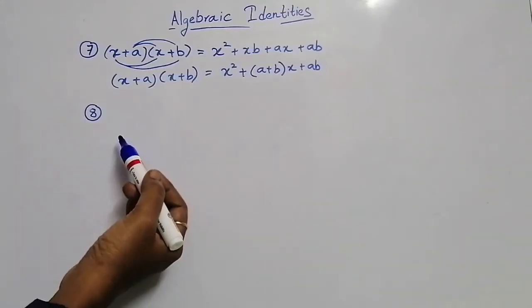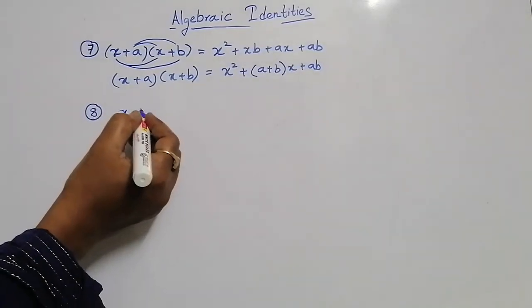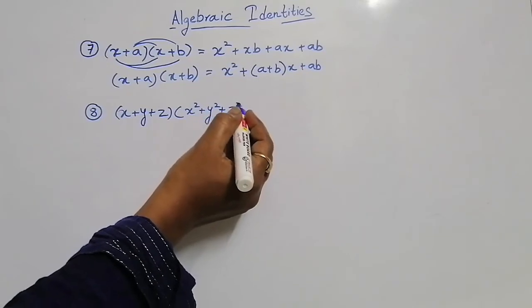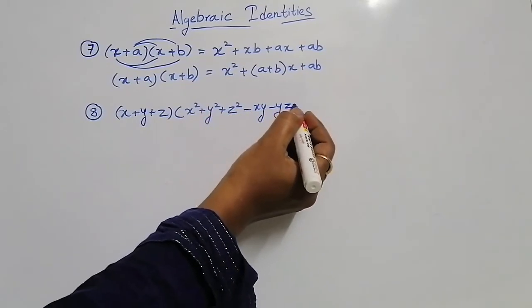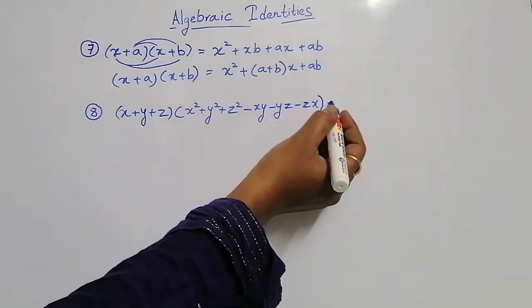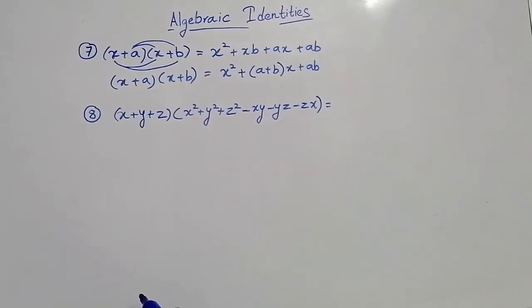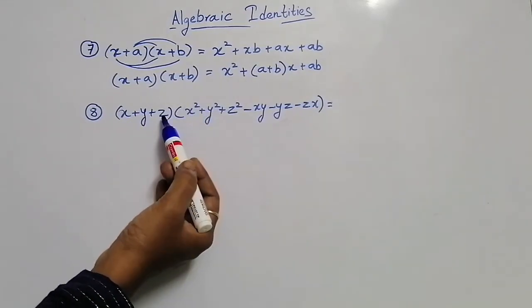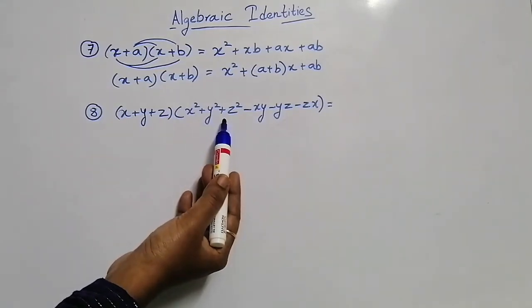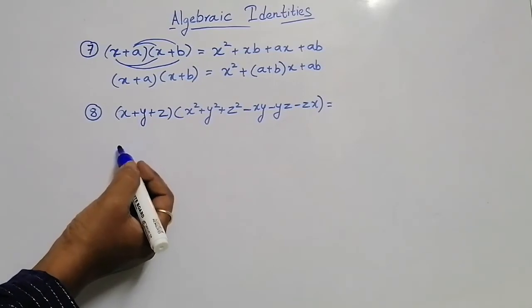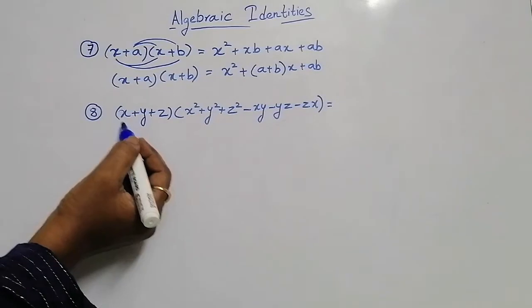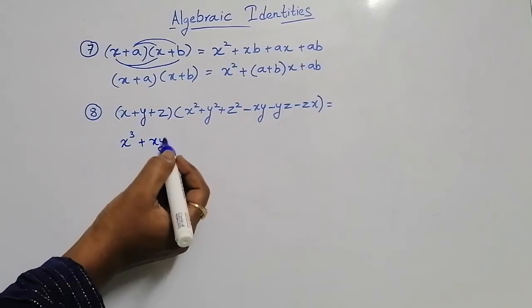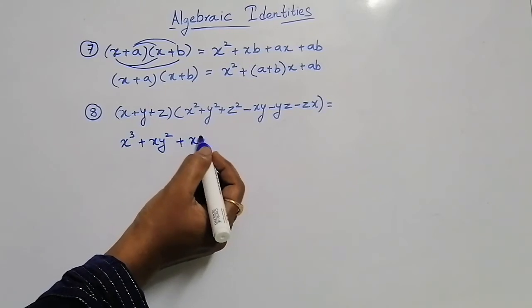The next identity I am going to take is x plus y plus z into x square plus y square plus z square minus xy minus yz minus zx. We are going to find the value for this. Apply distributive property — multiply this x with all these terms, multiply y with all these terms, and multiply z with all these terms. We will get: x into x square as x cube, plus x into y square as plus xy square, plus x into z square as plus xz square.